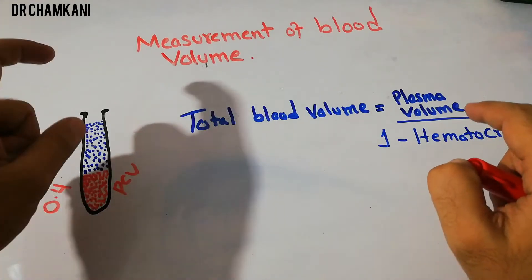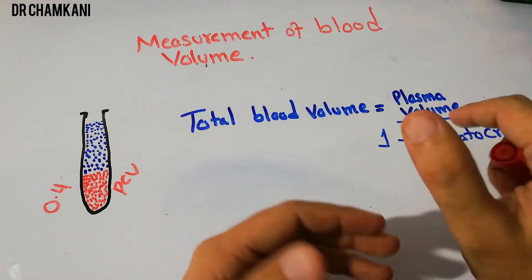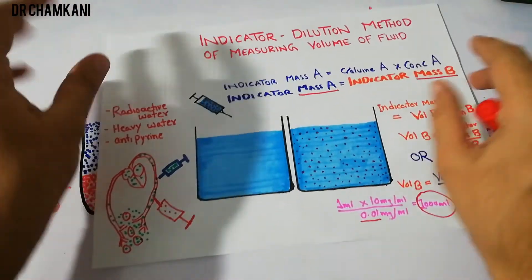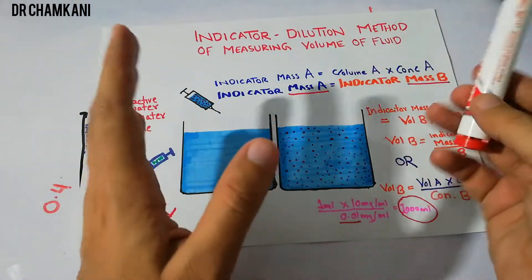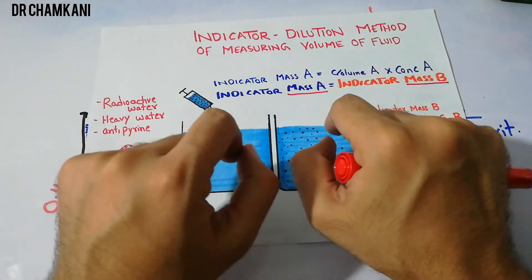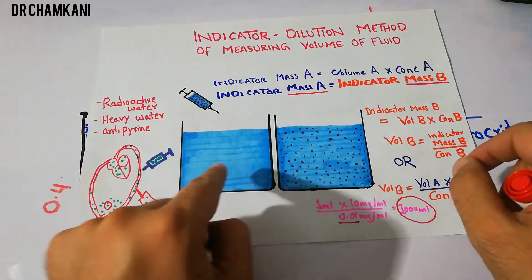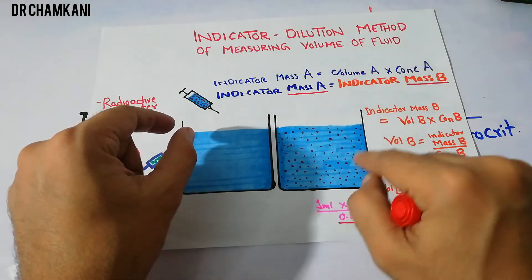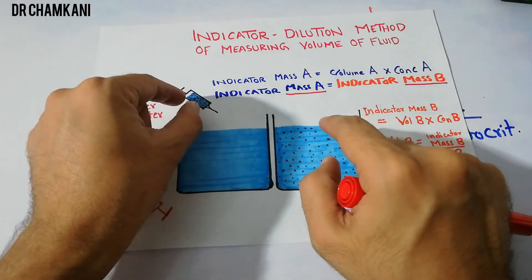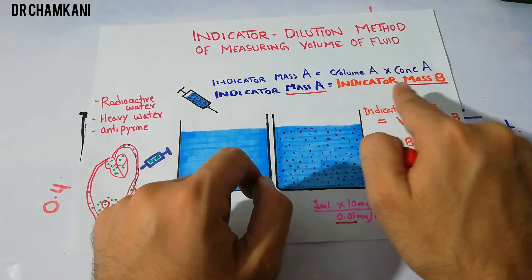That small sample is not sufficient to give us the plasma volume. To get plasma volume we use the indicator dilution method, which states that if we take an indicator whose mass is the product of volume A times concentration A, and inject it into the fluid whose volume we want to measure, we can calculate its concentration again. Its mass before injecting and its mass inside this volume remain the same — this is the law of conservation of mass. So indicator mass A equals indicator mass B.